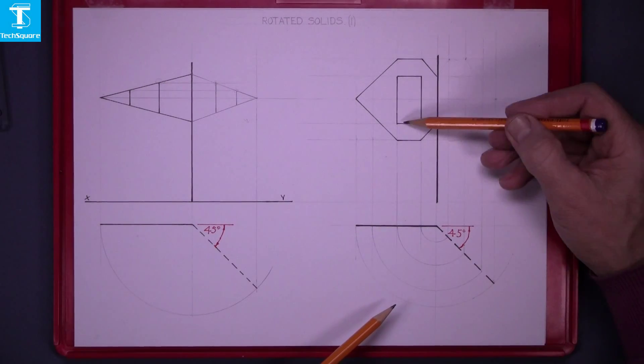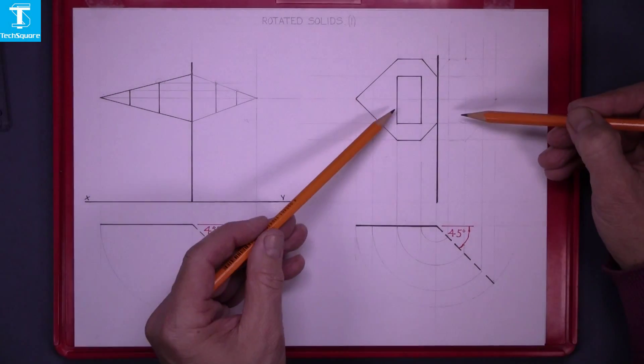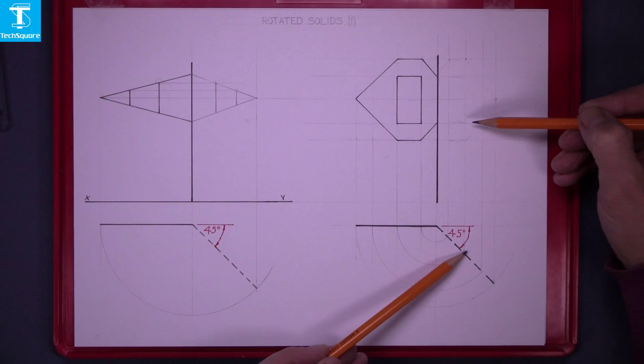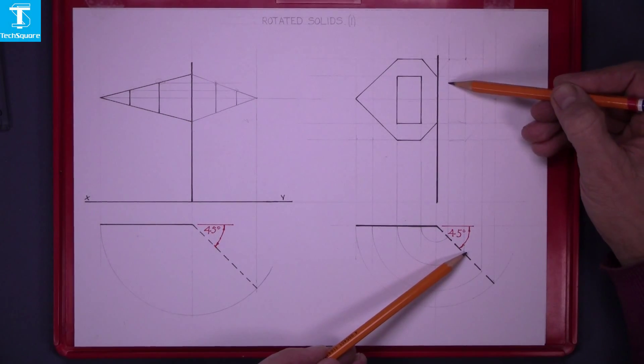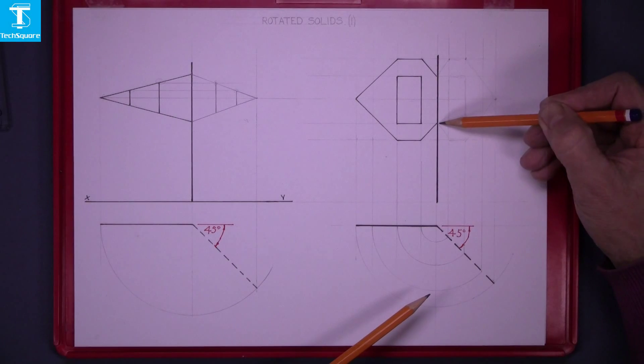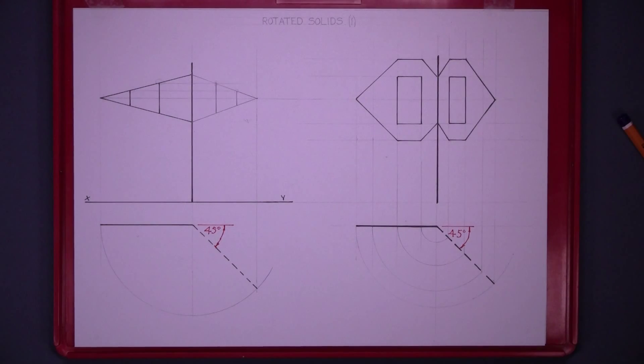Now to get the rectangle. The rectangle is going to be in this position here. Follow the circle around. That gives you the side of it there, and there. That's the flag complete, and that's your rotation of solids one complete.